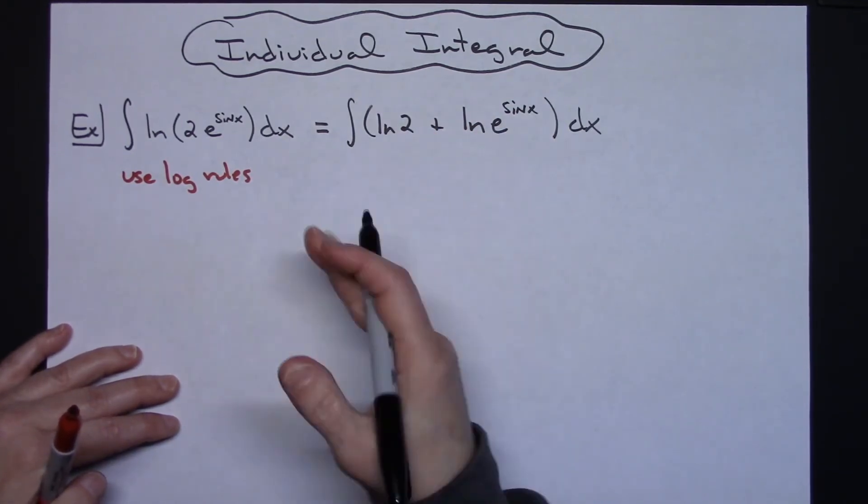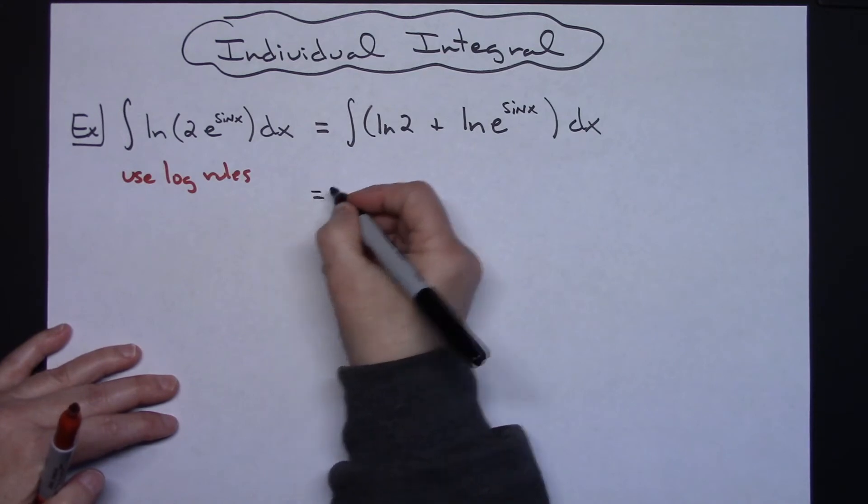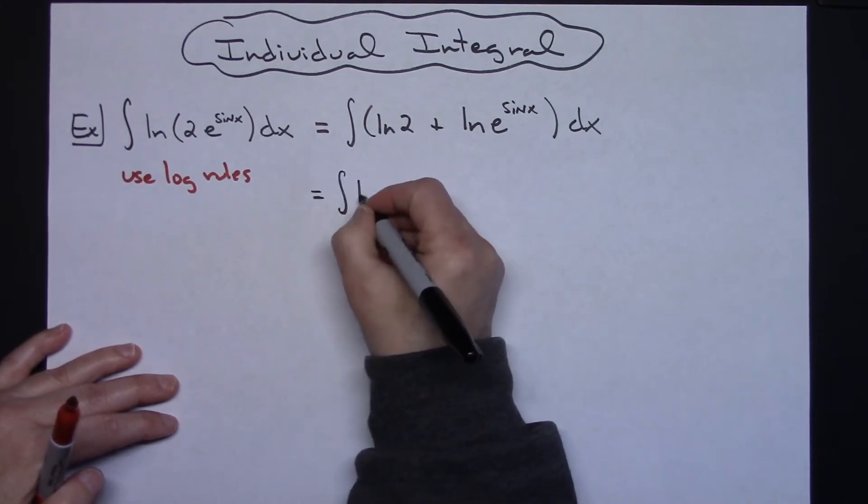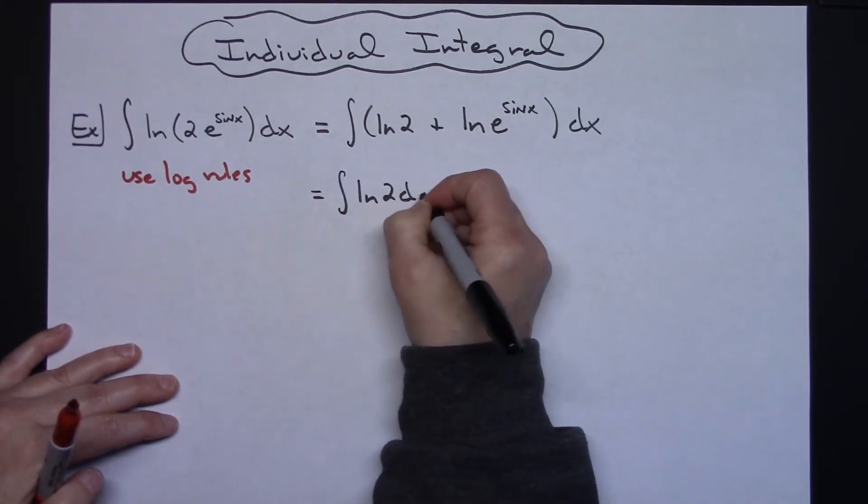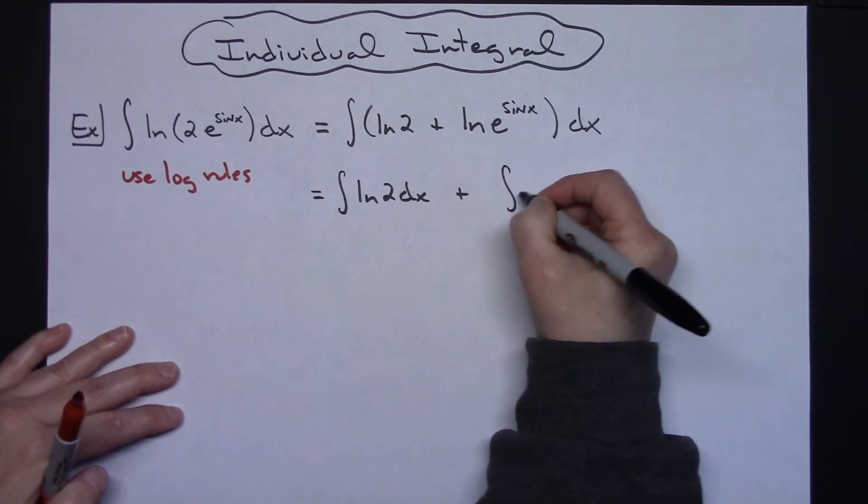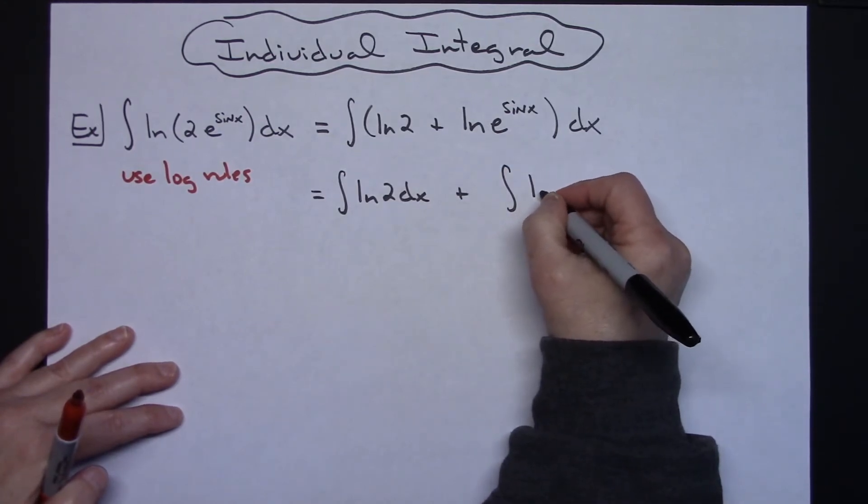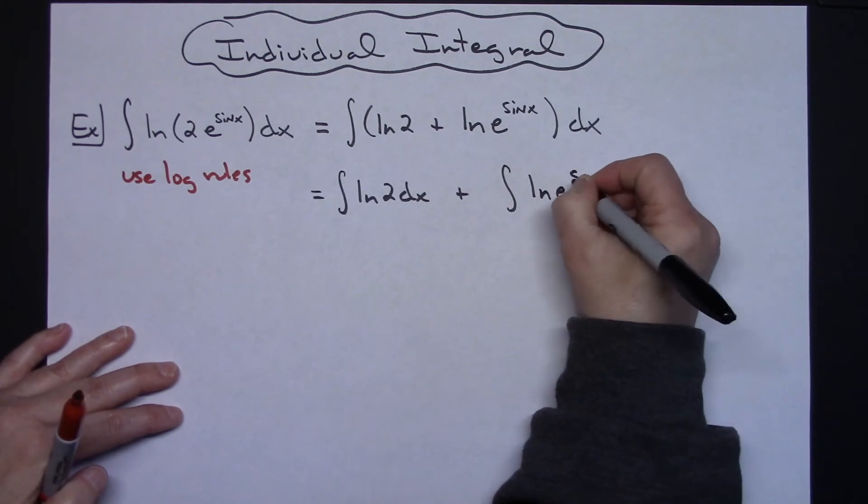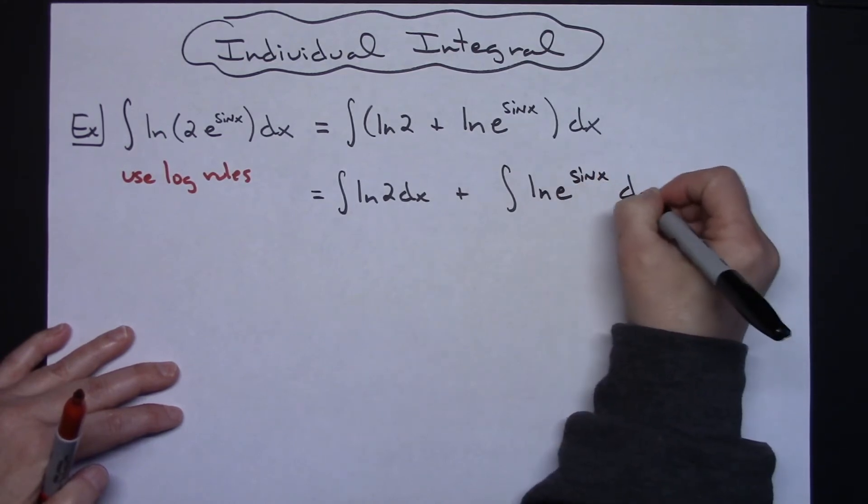Now I'm going to break it up and integrate them individually. So I'll have the integral of natural log of 2 dx plus the integral of natural log of e raised to the sine x dx.